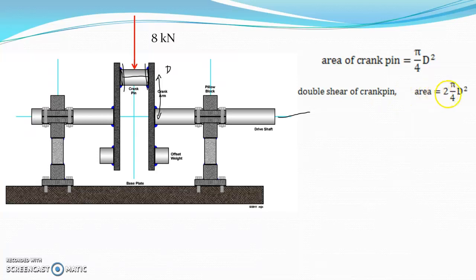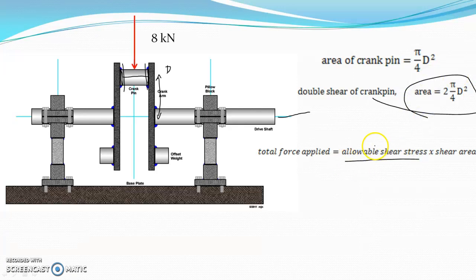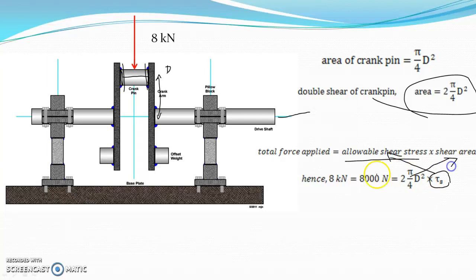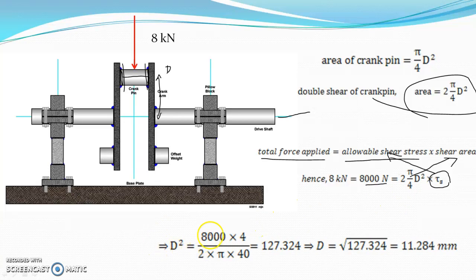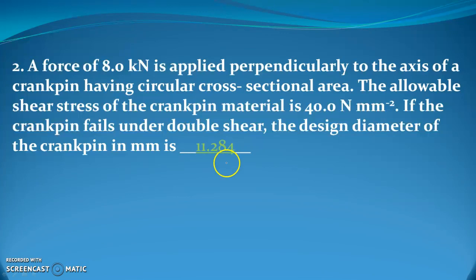For double shear: total force = allowable shear stress × shear area, so 8000 N = 40 × 2 × (π/4 × D²). Solving: D² = (8000 × 4) / (2 × π × 40), giving D = 11.284 mm. So the design diameter of the crank pin should be a minimum of 11.284 mm so that it will not fail.